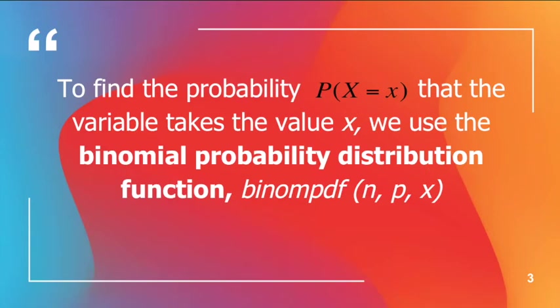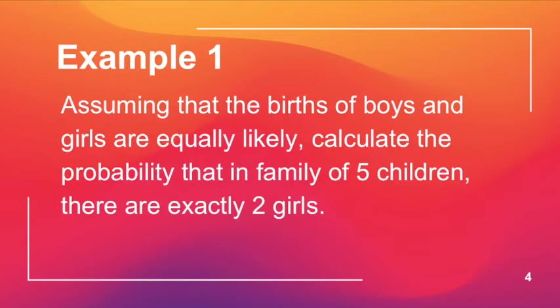To find the probability P(X = x) — that the variable takes the value x — we use the binomial probability distribution function, binomPDF(n, p, x). I'm going to show you how to use the graphic display calculator with an example, and later you'll find out what n, p, and x mean.